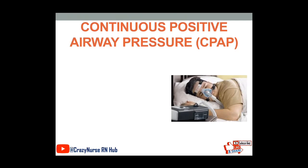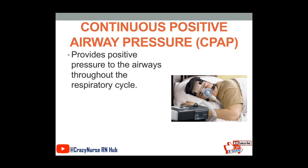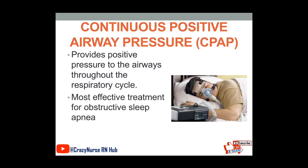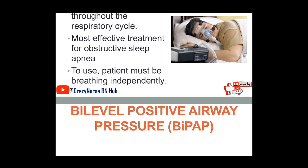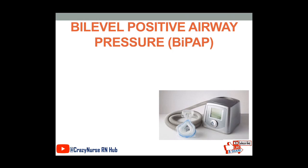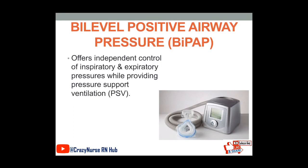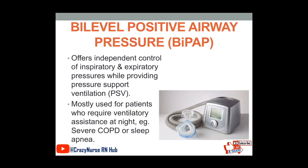Now let's proceed to continuous positive airway pressure, or CPAP. It provides positive pressure to the airways throughout the respiratory cycle. It is the most effective treatment for obstructive sleep apnea because the positive pressure acts as a splint, keeping the upper airway and trachea open during sleep. To use CPAP, the patient must be breathing independently. Another one is bi-level positive airway pressure, or BiPAP. It offers independent control of inspiratory and expiratory pressures while providing pressure support ventilation, and is mostly used for patients who require ventilatory assistance at night, such as severe COPD or sleep apnea.